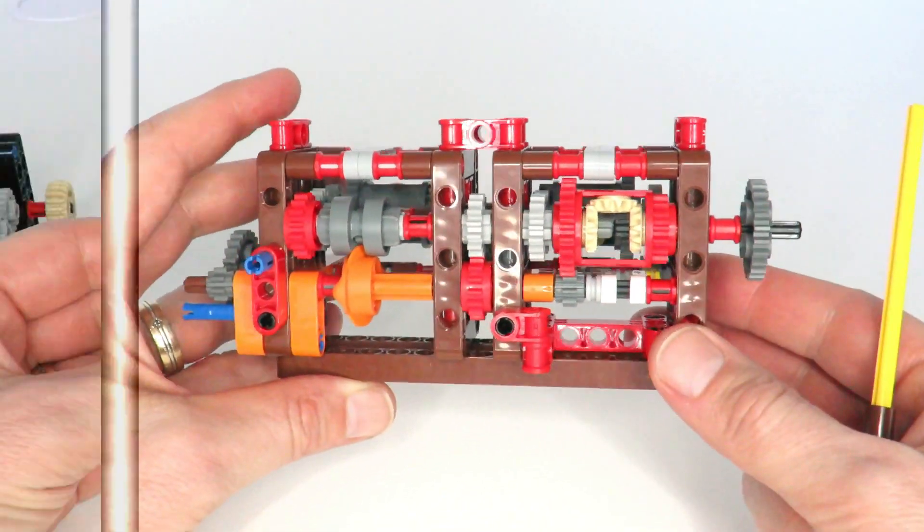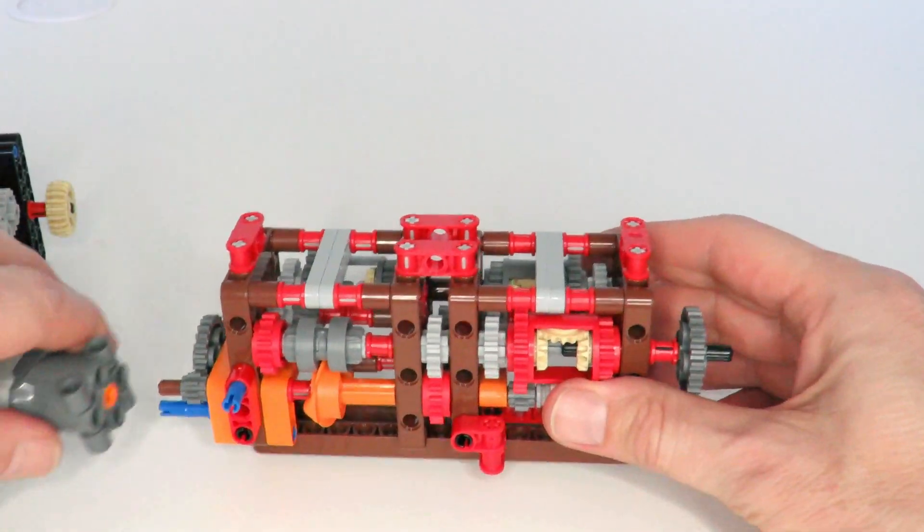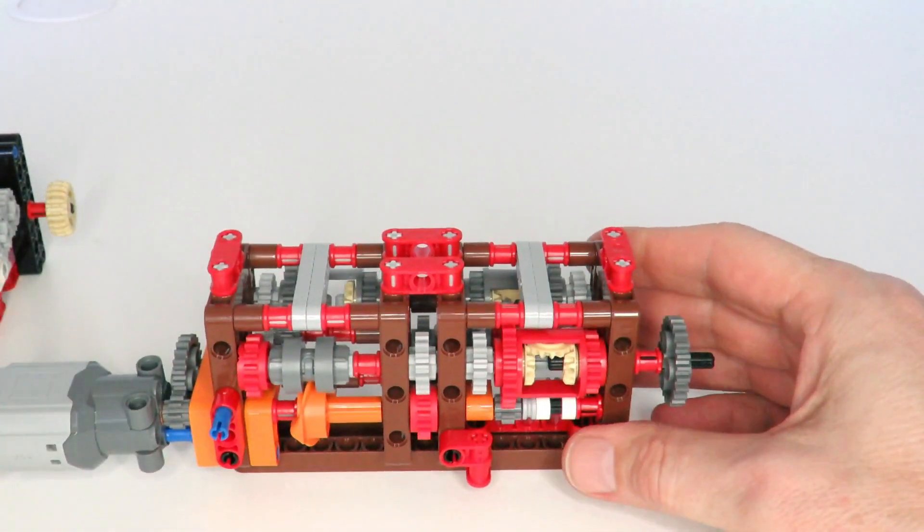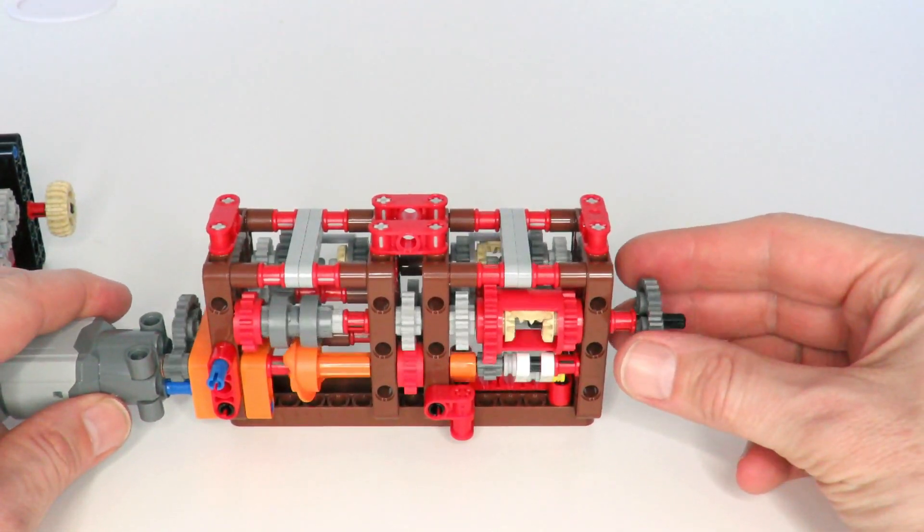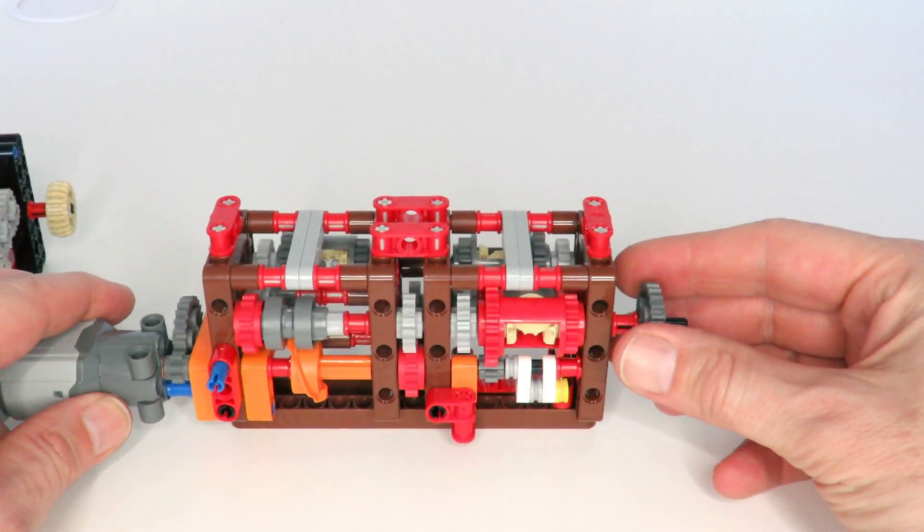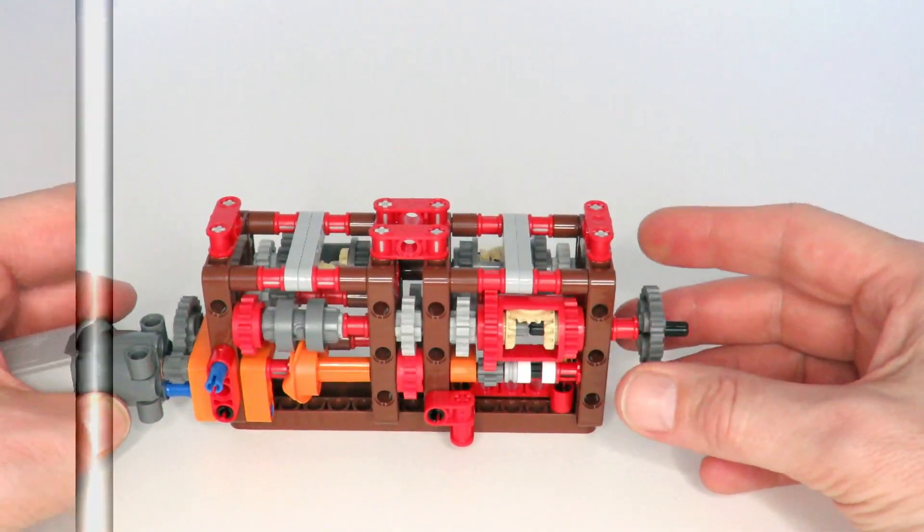And this will just demonstrate how this automatic gearbox works in practice. So we'll just connect this motor over here like that, and we'll turn it on, and you can see the output's rotating. And as we put some load on the output, it smoothly changes gears from speed one to the lower speed number two.